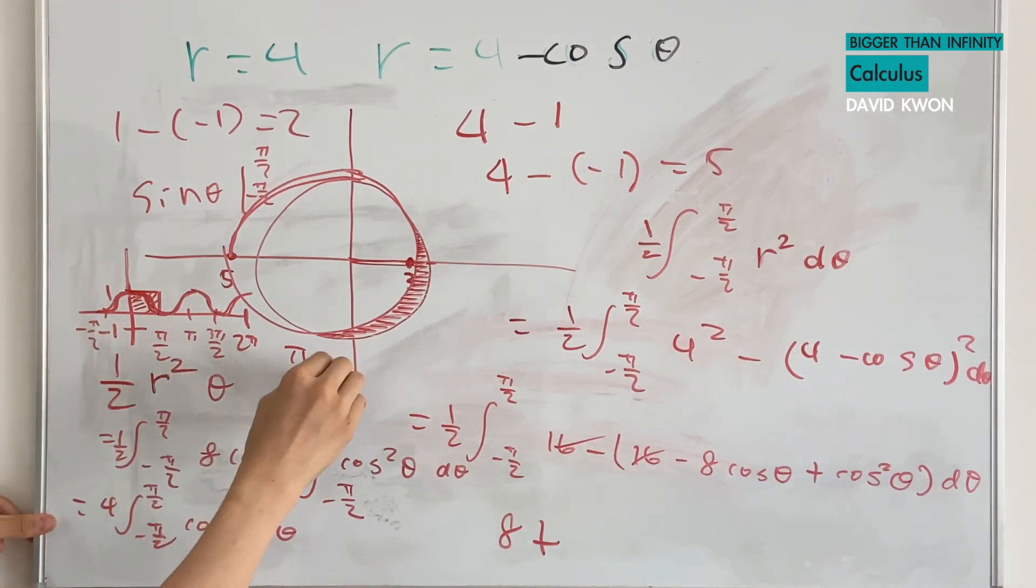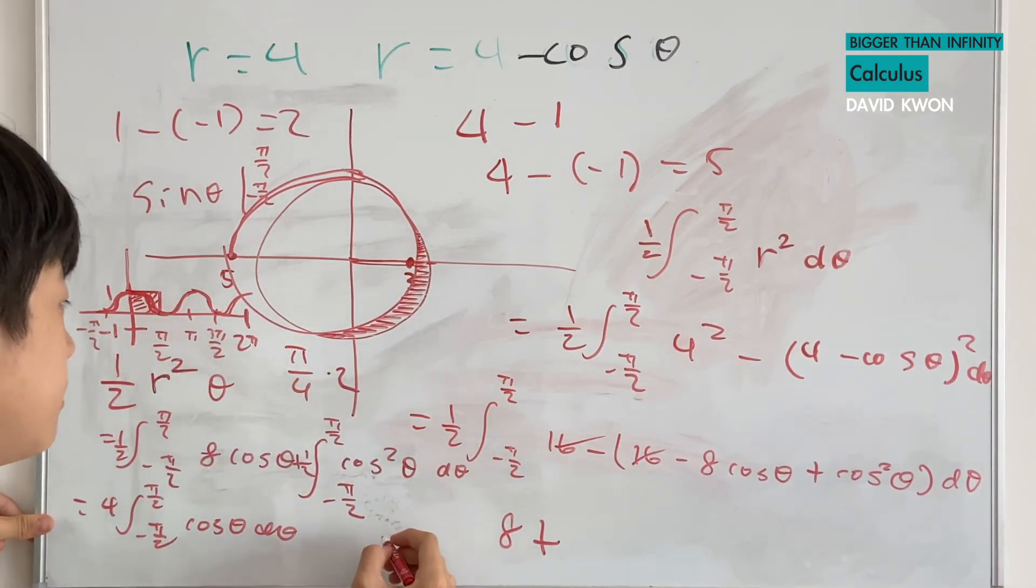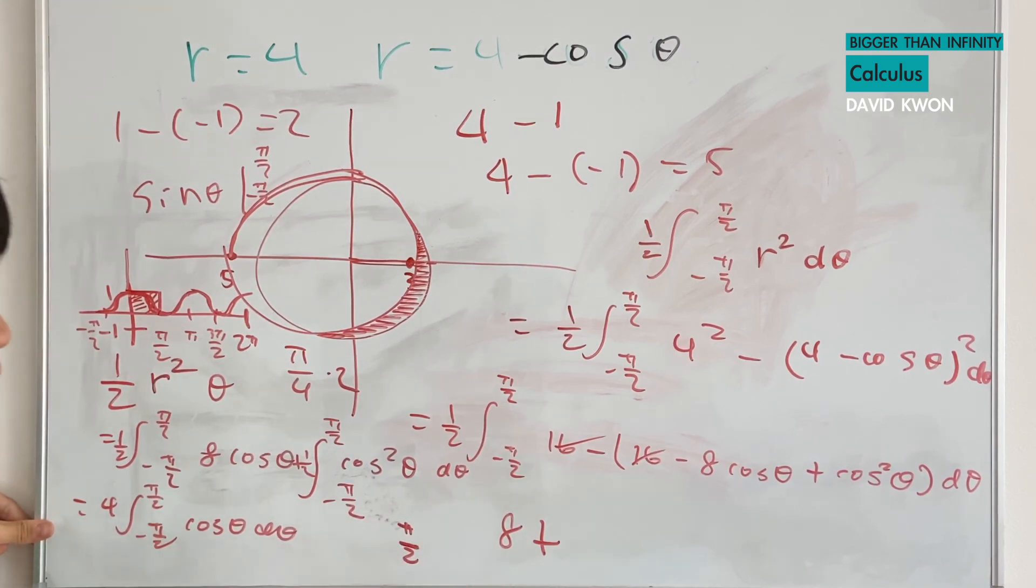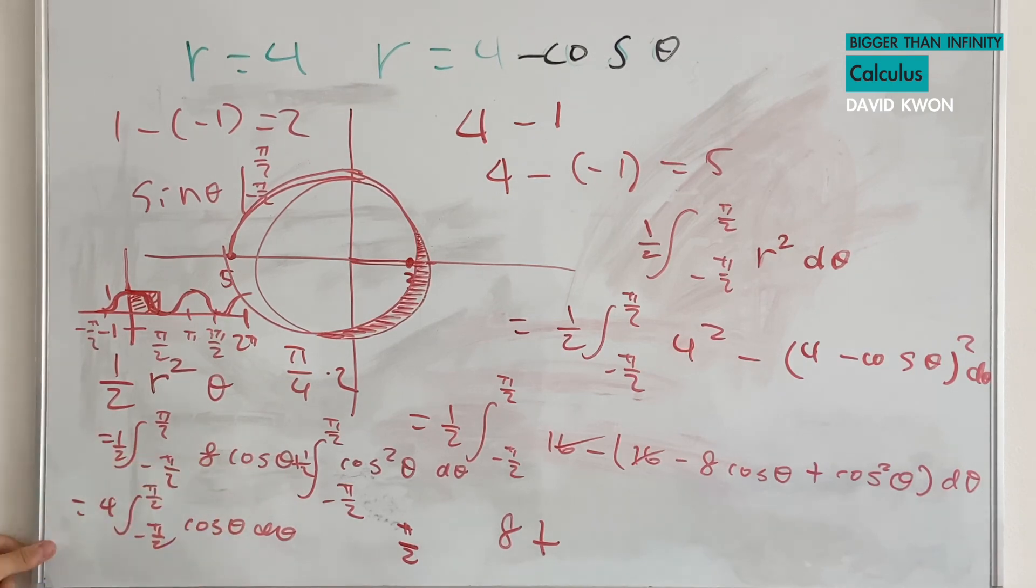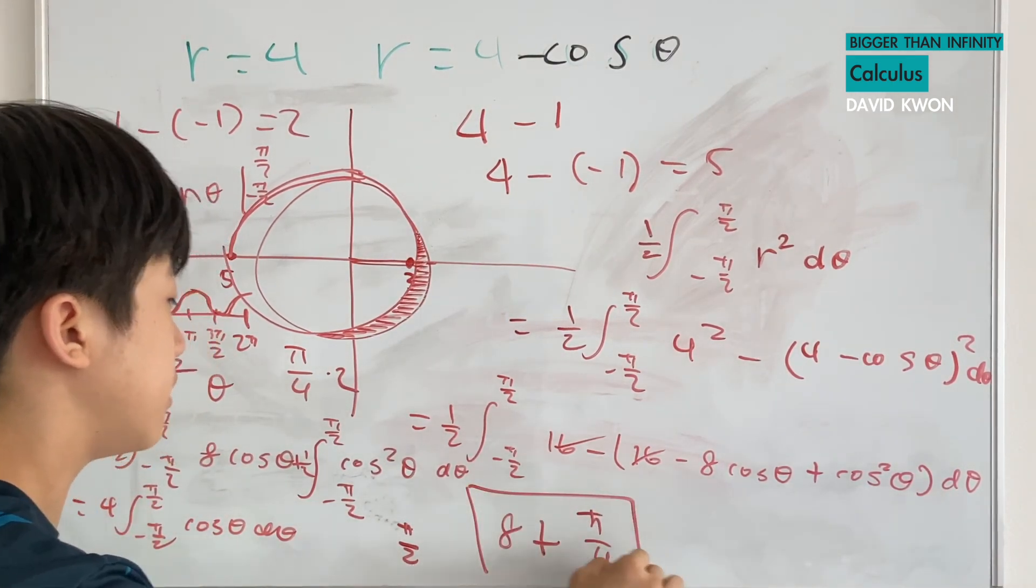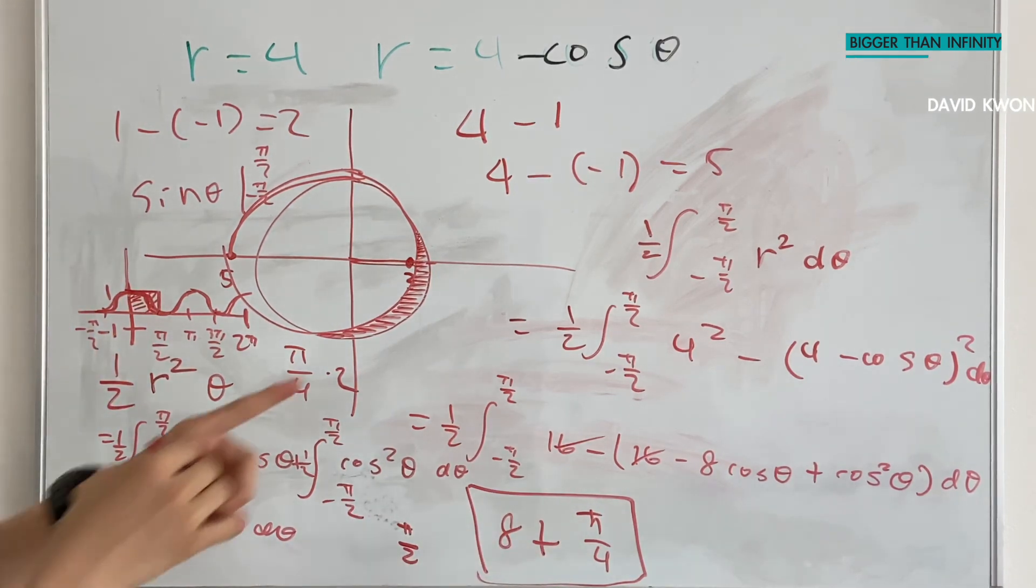But we have two of them, so that's times 2. So that's going to be pi over 2. But we still have that times 1 over 2, so that's going to be pi over 4. This is our answer, 8 plus pi over 4 for this shaded portion.